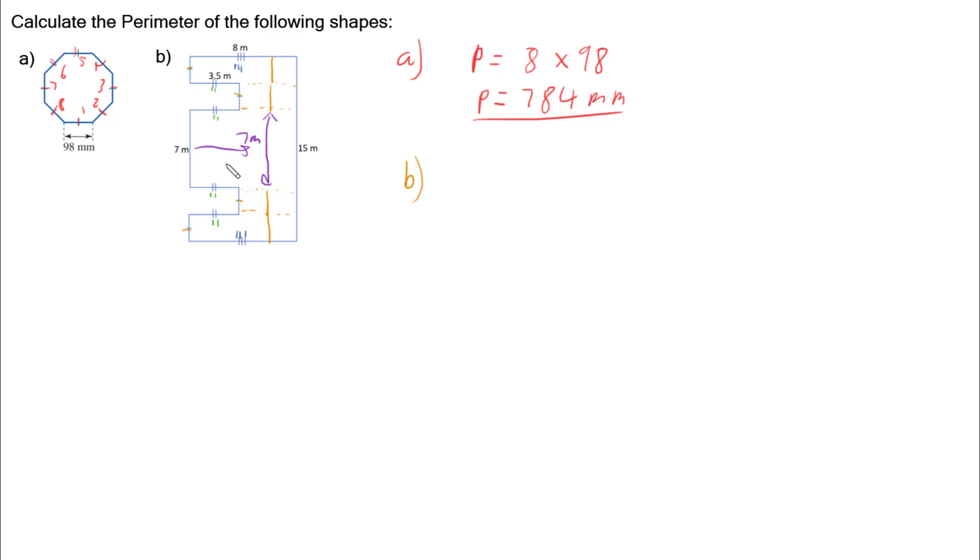So if I work out 15 minus 7, that's 8 metres, which means these 1, 2, 3, 4 parts left over total 8 metres. If we divide that 8 by 4, that means they're worth 2 metres each. So each of these lines is 2 metres long. So I now know the length of everything.